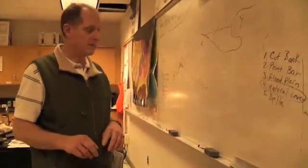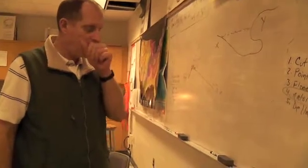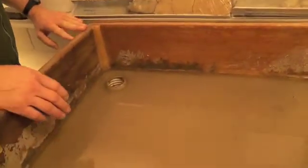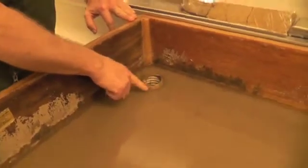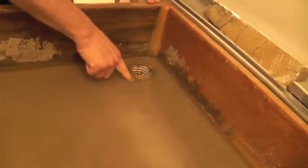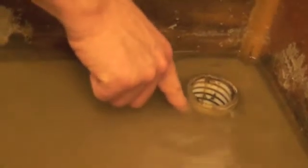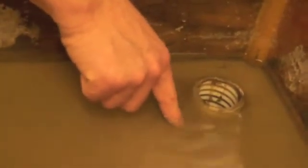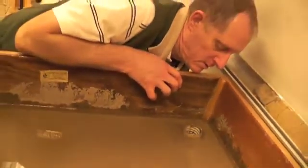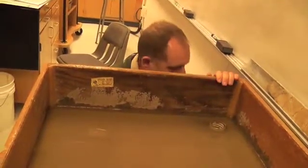Down here on the ocean end, here's the drain. It's covered in sediment, but there is a rubber fitting that is embedded in the floor of the stream table. And through that rubber fitting, we have this flexible pipe, which I'm going to move so you can see it. You can see it coming up there.